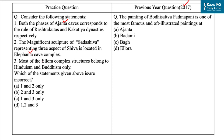The three sites are: Ajanta Caves, Elephanta Caves, and Elora Complex. The first statement: both phases of Ajanta Caves correspond to the rule of the Rashtrakutas and Kakatiya dynasties respectively. The caves at Ajanta are excavated from a vertical cliff above the left bank of the river Wagora in Aurangabad district, Maharashtra — thirty in number, of which five are Chaityas and the rest are Viharas. Excavation was carried out in two phases. The first phase coincides with the Satavahana dynasty from the 2nd to 1st century BCE, while the second phase corresponds to the Basim branch of the Vakataka dynasty in the 5th to 6th century CE. So the first statement is incorrect.